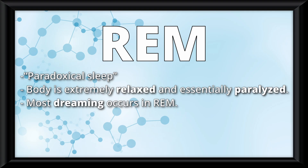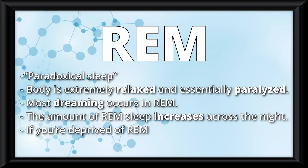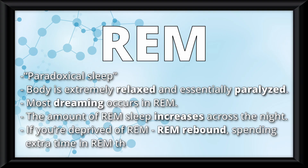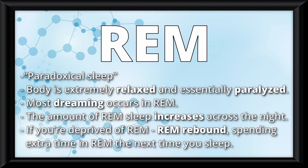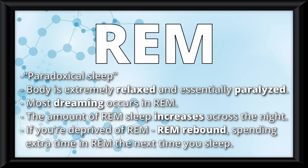Most dreaming occurs in REM sleep. The amount of REM sleep increases across the night. If you're deprived of REM, your body enters REM rebound, spending extra time in REM the next time you sleep. This sleep cycle lasts a varied amount of time, but will fall within the range of 10–60 minutes.